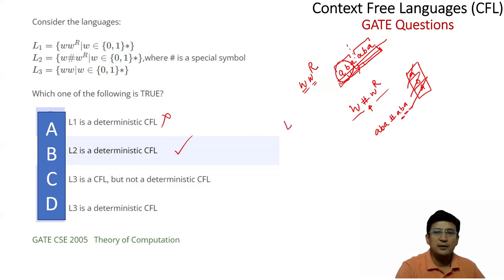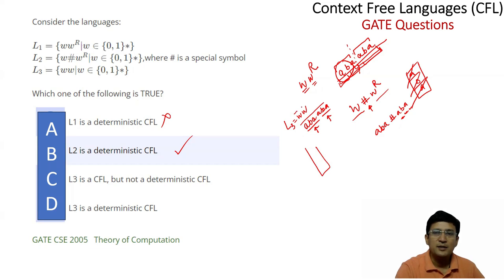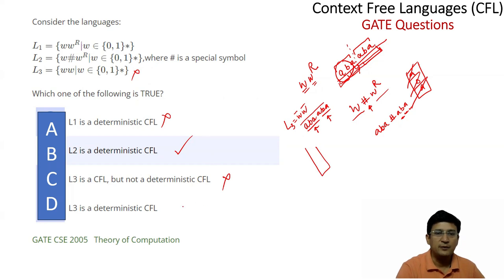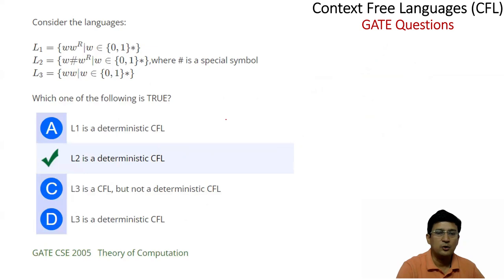What about L3? L3 is {ww} — the same string concatenated with itself. For example, ABA concatenated with ABA. Using the stack's last-in-first-out property, we can check the same string, but checking equal halves without a separator is not possible with a stack. Therefore L3 is not context-free. So option two is the only correct option.